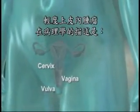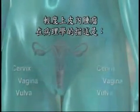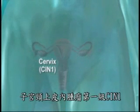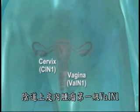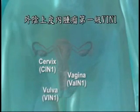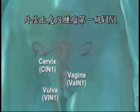Low-grade intraepithelial neoplasias occurring in the mucosa of the cervix, vagina, or vulva are described histologically as Cervical Intraepithelial Neoplasia Grade 1 (CIN1), Vaginal Intraepithelial Neoplasia Grade 1 (VAIN1), and Vulvar Intraepithelial Neoplasia Grade 1 (VIN1).